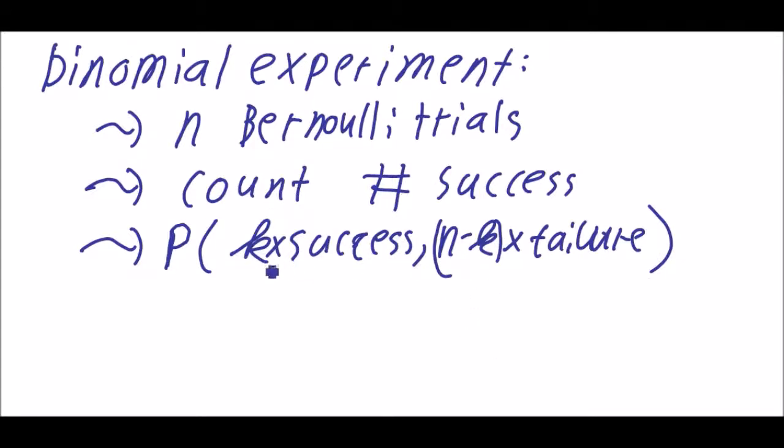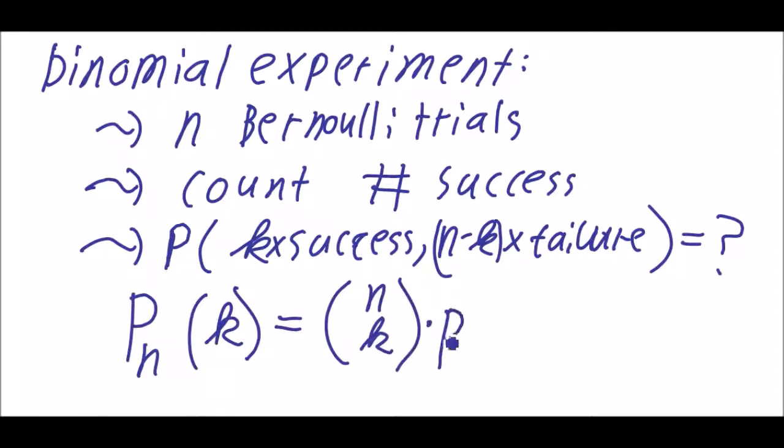This is the interesting question: what is the probability of k successes? We denote it with p_n of k, which is n choose k multiplied with p to the k times 1 minus p to n minus k.